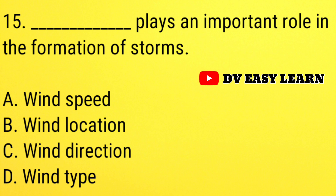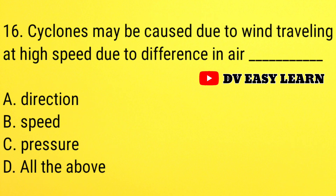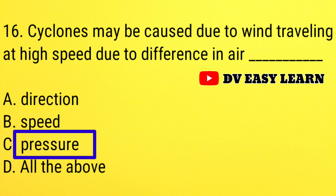Question number 15: dash plays an important role in the formation of storms. Correct answer: wind speed. Question number 16: cyclones may be caused due to wind travelling at high speed due to the difference in air. Correct answer: pressure.